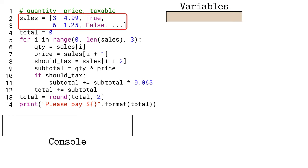This first line of code uses square brackets and commas to make a list of data. For each type of item in a transaction, it is represented by an integer quantity, followed by a float price, followed by a boolean representing if sales tax applies or not.